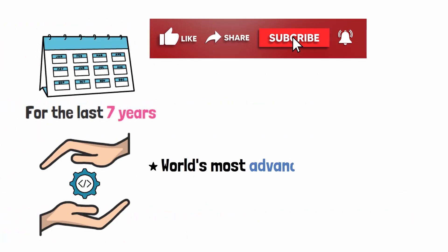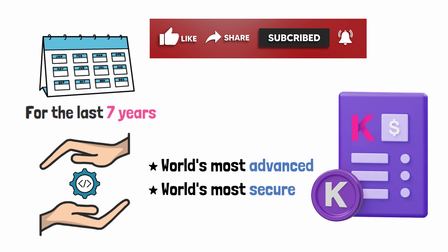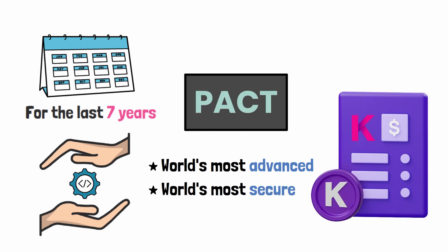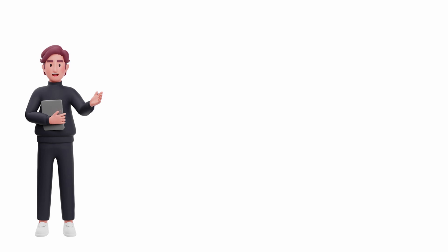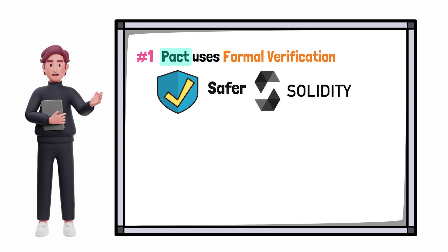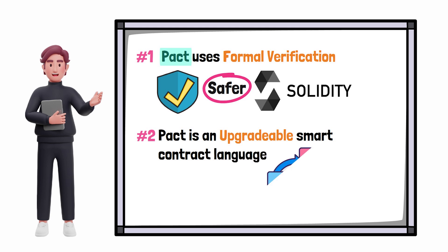So let's recap everything that we learned so far and talk about a few more key highlights about Pact. Number one: Pact uses formal verification, which makes coding in Pact one billion times safer than coding in Solidity. Pact makes blockchain safe again. Number two: Pact is an upgradable smart contract language. This means that it has the ability to evolve. Solidity does not. This makes Solidity more like MySpace and Pact more like Facebook.